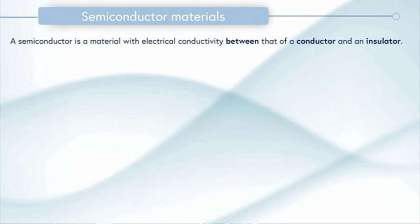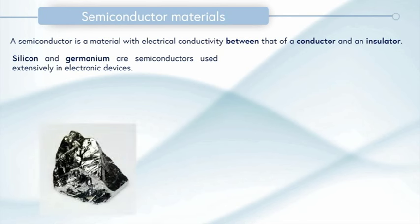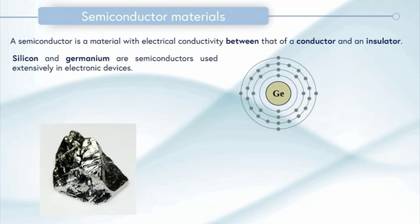A semiconductor is a material with an electrical conductivity between that of a conductor and an insulator. Silicon and germanium are semiconductors which are used extensively in electronic devices. Here's a picture of what some germanium looks like in its metal form and here's our atomic diagram. The symbol in the middle, GE, is the symbol in the periodic table and that's the nucleus of our atom and each of the dots circling it are electrons.